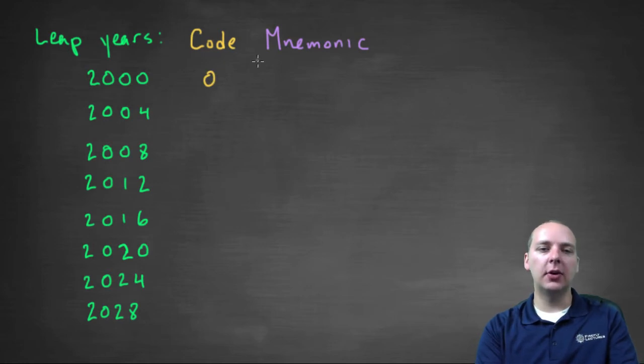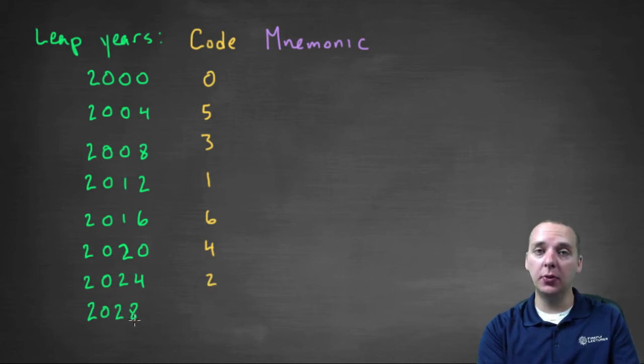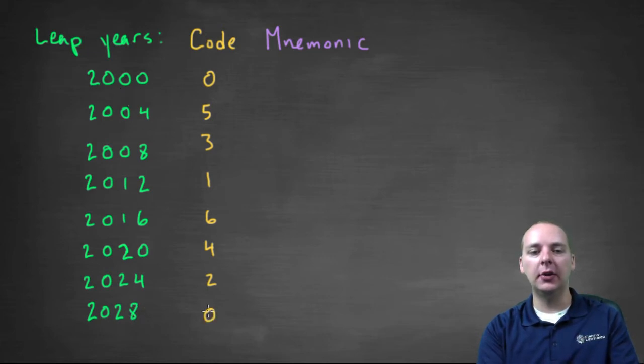So the year 2000's code is zero, and actually, just so I don't have to switch colors back and forth, let me just write all the year codes, and then I'll do the mnemonics. So the year code for 2000 is zero, for 2004 it's five, 2008 is three. Don't worry if these look crazy, just bear with me, there's easy ways to remember these. 2012 is one, 2016 is six, 2020 is four, 2024 is two, and 2028, modulo 28, if you take the year 28, and subtract out 28, it'll drop you back to the year 2000, which is zero again.